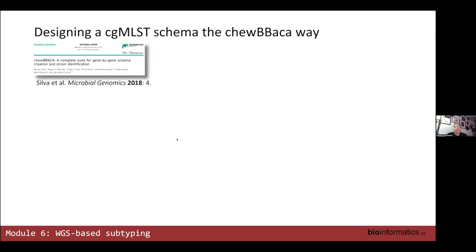In the olden days you had to design schemas by hand — you'd do a pan genome analysis, identify core genes, and then manually go through the process of assessing whether or not the core genes had all the criteria we're looking for. Thankfully, software for pan genome analysis has been available for a while, but now there's a program called ChewBBACA.